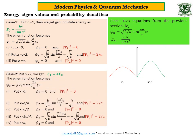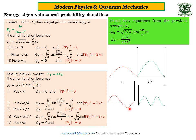Let us repeat the same thing, this time taking n equals 2. Then the energy becomes E_1 equals 2² times E₀, that is 4E₀. And psi_2 equals sqrt(2/a) sin(2 pi x / a). Taking different values of x from 0 to a and simplifying, we get these results. Plotting them graphically: psi_2 is 0 at x=0, rises to a maximum, comes back to 0, goes to a negative maximum, and returns to 0. Taking the modulus squared — the probability density — both peaks become positive. This is the graphical representation for case number 2.